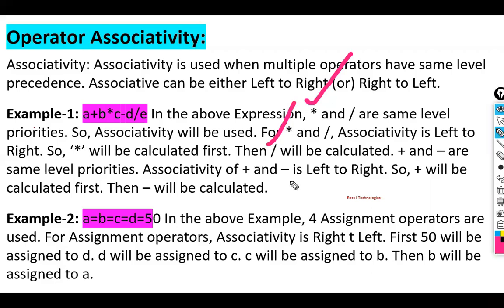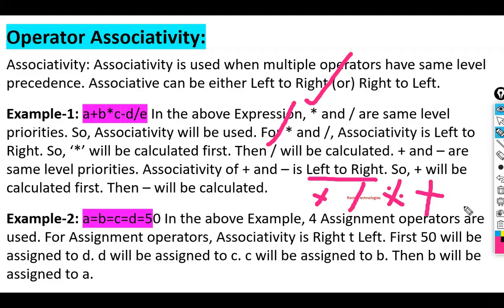The associativity of addition and subtraction is left to right. We can see this clearly in the chart — left to right means the first operator in the expression is calculated first, then the next one, following the priority levels shown.